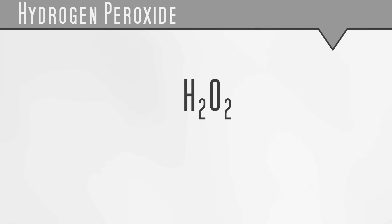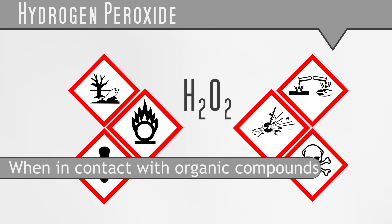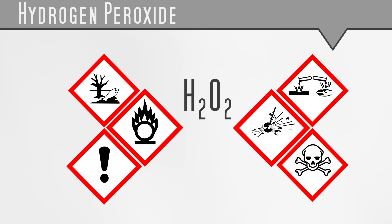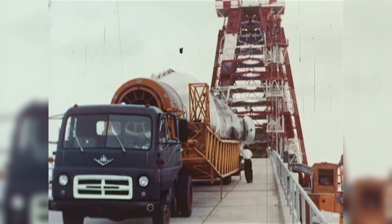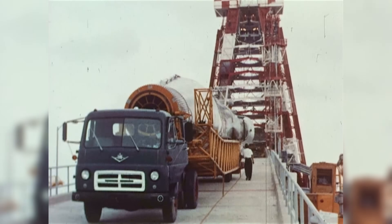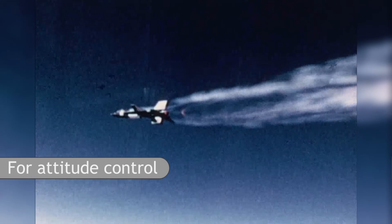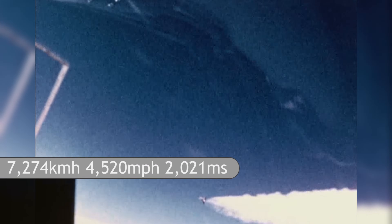Hydrogen peroxide is also toxic, flammable, and will form explosive compounds — at least that is true at the high concentrations used as monopropellants. At lower concentrations, it is a household item used for disinfecting and bleaching. Hydrogen peroxide was used in the first American human spaceflight program, Project Mercury, for attitude control. It was also used in the North American X-15, a hypersonic rocket-powered aircraft. Able to reach the edge of space, to this day it still holds the world record for highest speed recorded by a manned powered aircraft: Mach 6.7, set over 50 years ago in 1967.